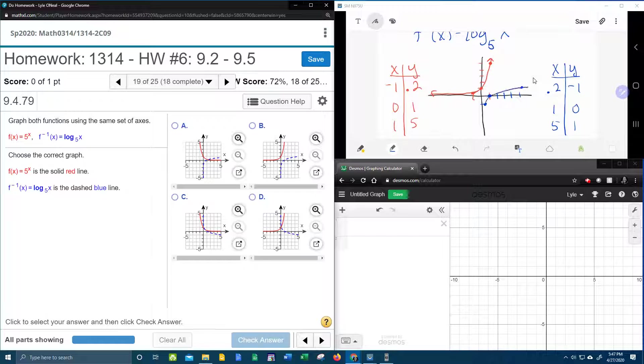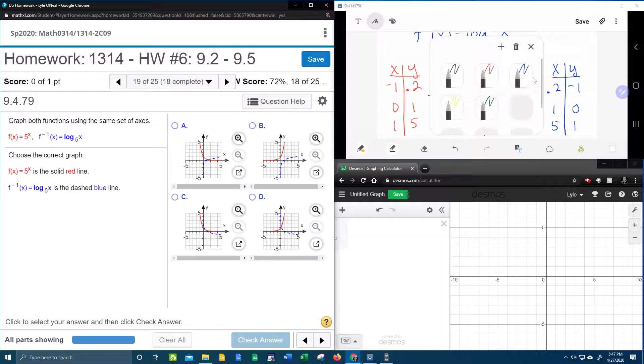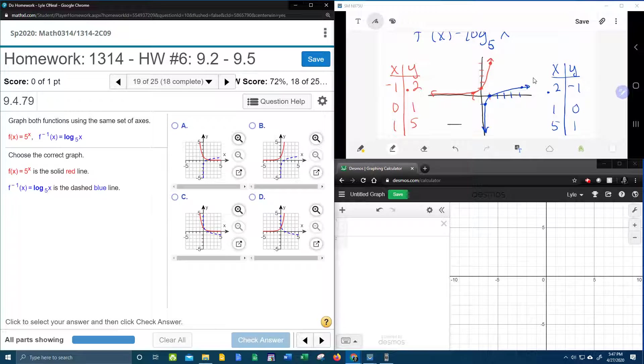And so again, this graph is curving up this way. The y axis here is going to be an asymptote. And can you see that if I draw the line y equals x through here, that we have symmetry.